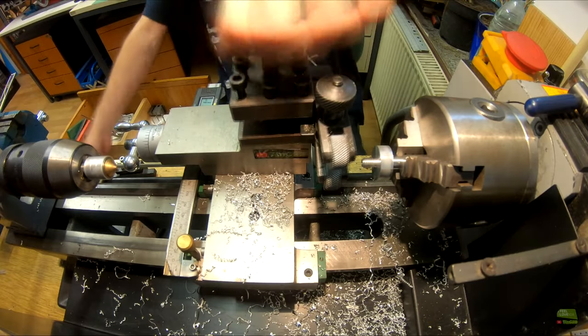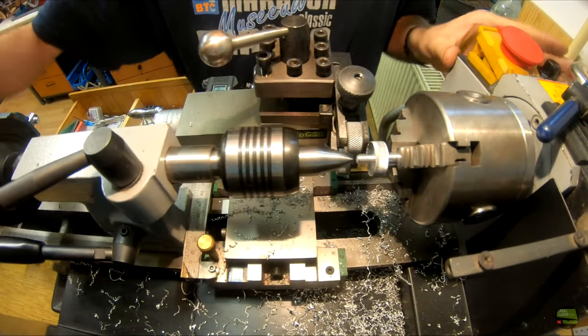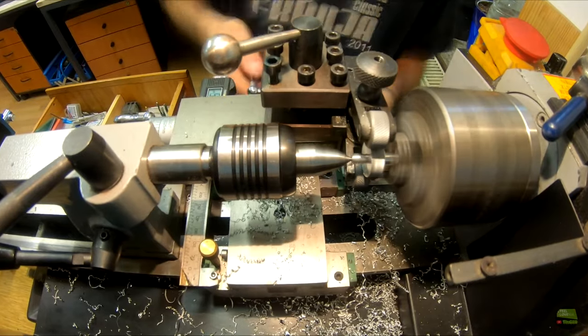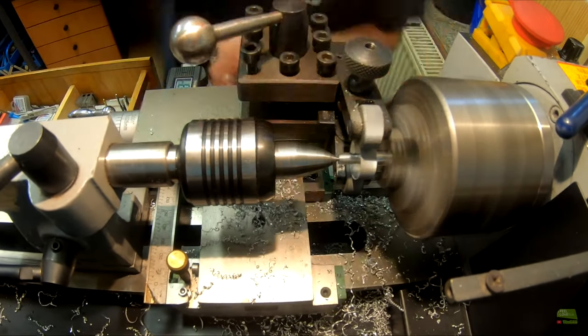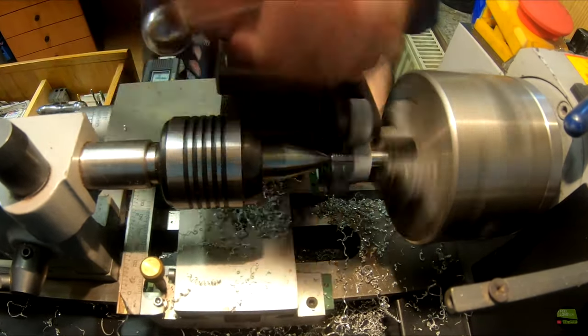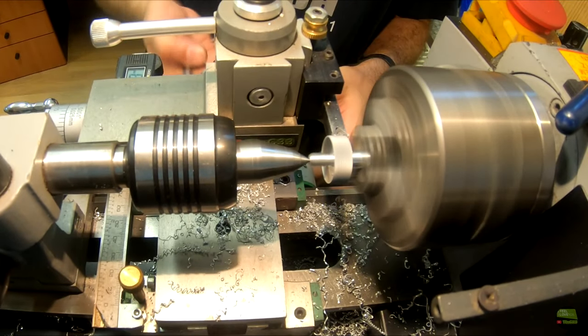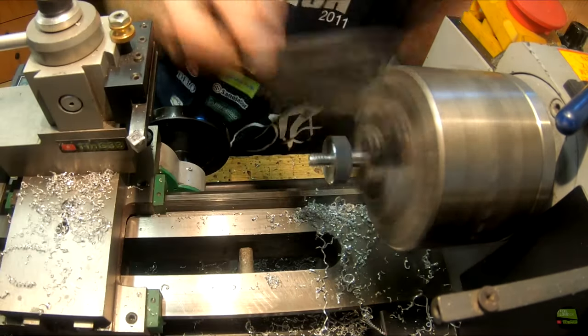Then I mount the knurling tool. It'd be better if I made that step when I had a solid piece of aluminum, because forces there are pretty big. So the axis and thread can be damaged. For extra support I help with a live center. When the grip is knurled, I just cut the edges and the part's done.